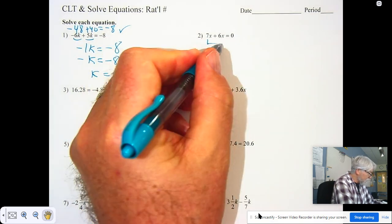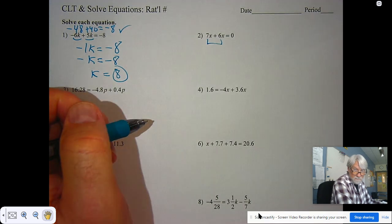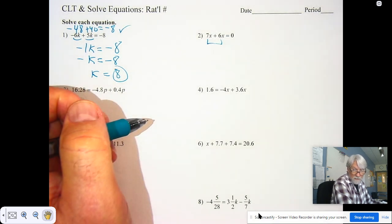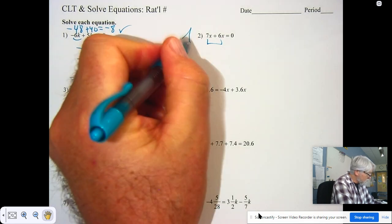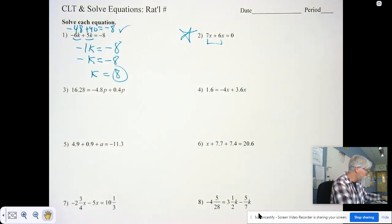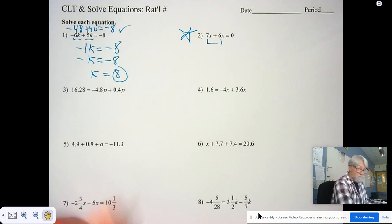So add seven X and six X, divide by the coefficient and find the value of X. Do number two in the red puzzle.